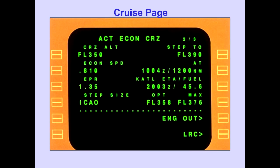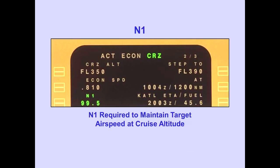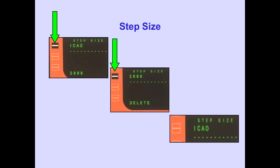Let's discuss the cruise page. The N1 line displays the N1 required to maintain the target airspeed at the cruise altitude. The step size line defaults to the ICAO interval.